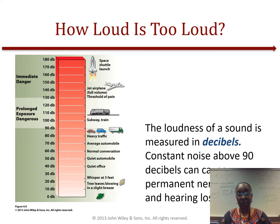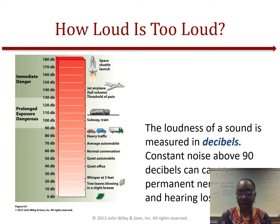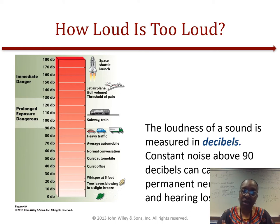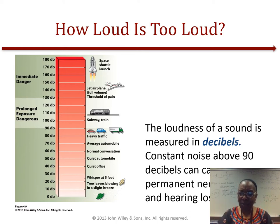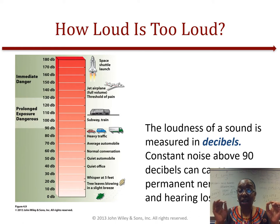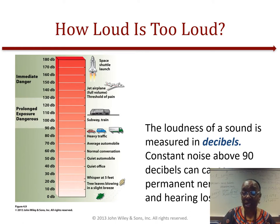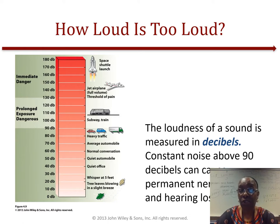For example, I damaged my ears and don't hear as well because of the loud noises from my youth. Coupled with aging, it takes a little time for me to listen, and sometimes it's hard for me to filter in crowded situations. Just remember, the loudness of a sound is measured by decibels, and constant noise over 90 decibels can cause permanent nerve damage to your hearing.